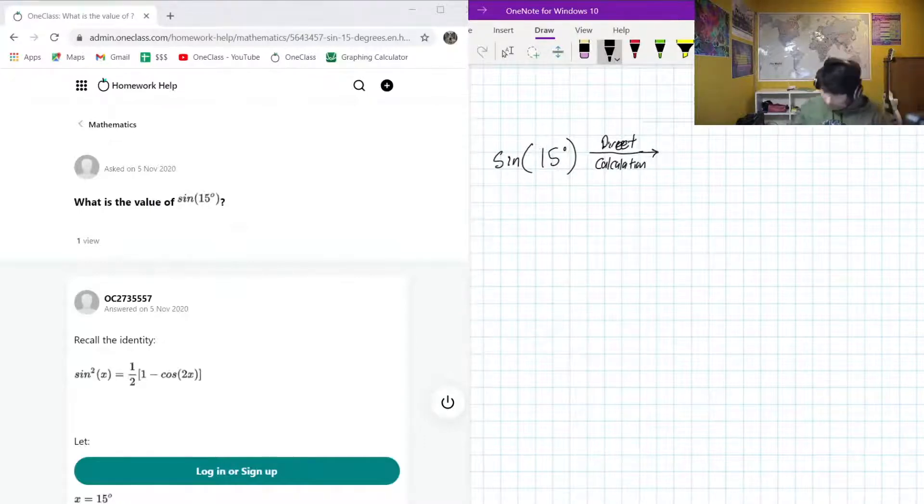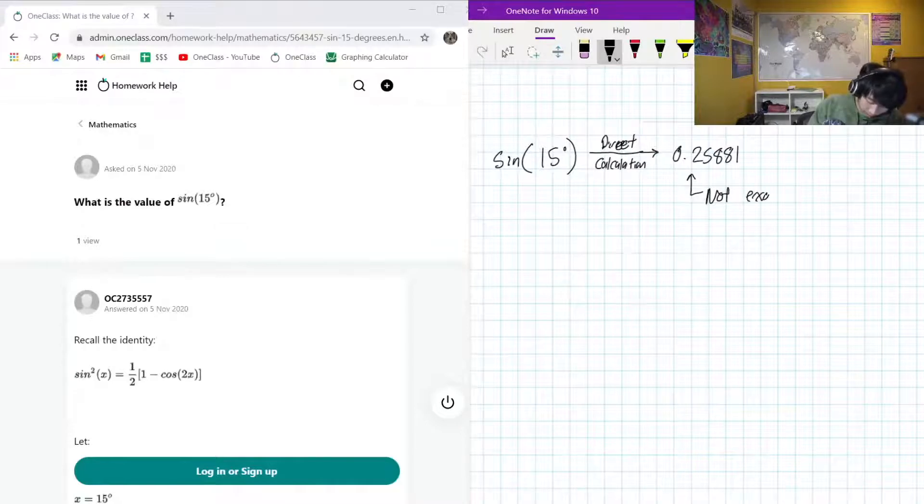So the direct calculation, well, let me ask my calculator ASAP fast, is going to be 0.25881. And this is a decent answer, but this is not exact answer. Not exact enough.